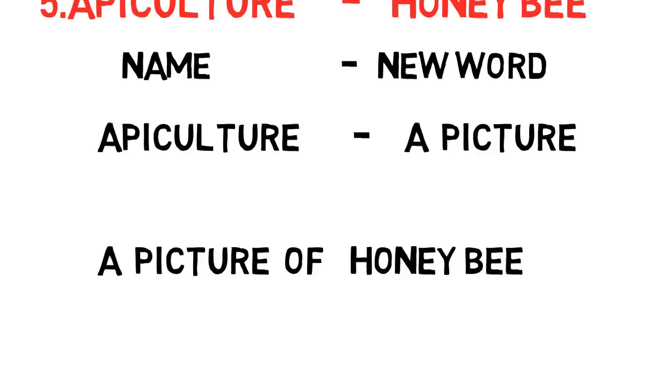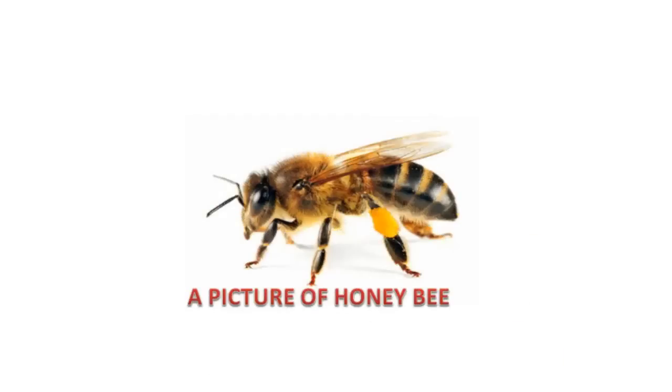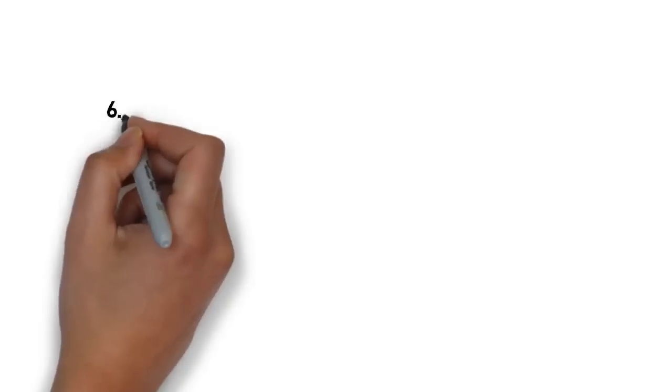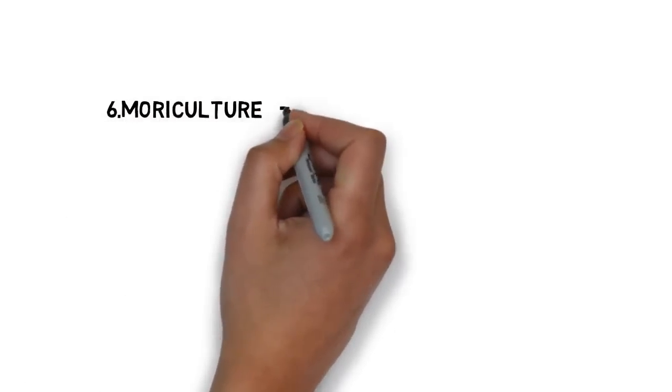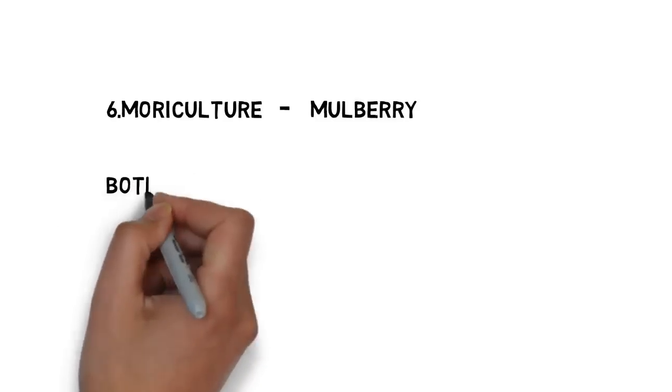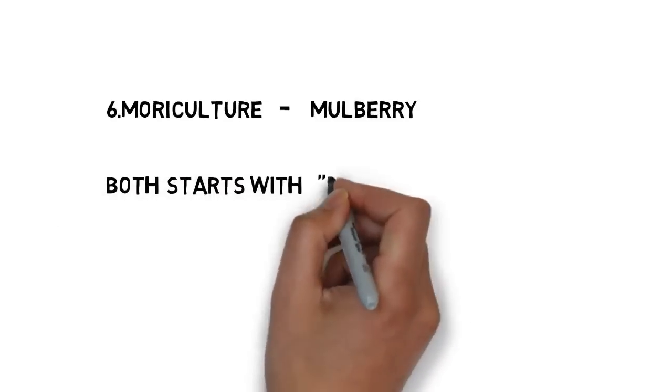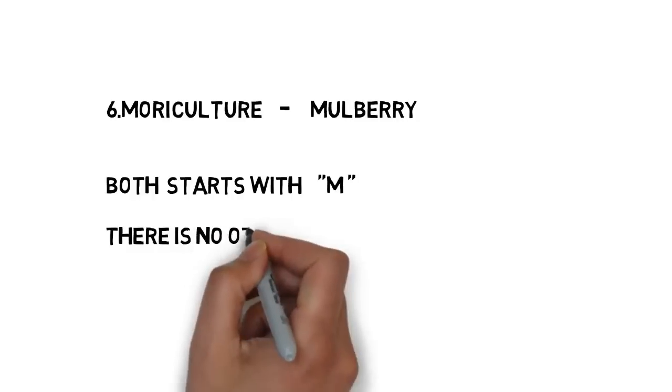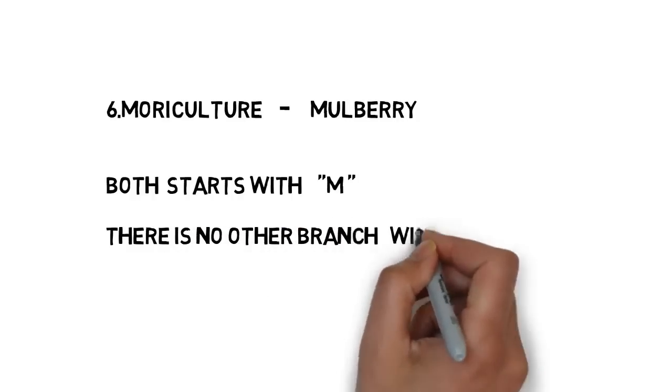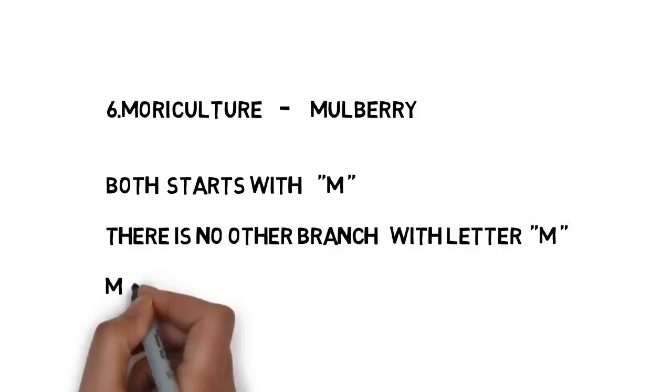Next, moriculture is related to mulberry. There is no other branch in agriculture starting with the letter M, so you can remember both easily — both moriculture and mulberry start with M. Or you can remember it as 'more berry.' So: moriculture — mulberry.